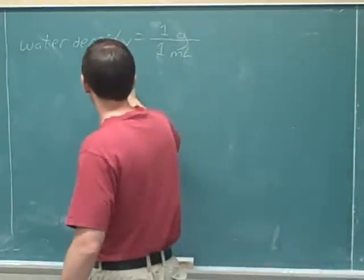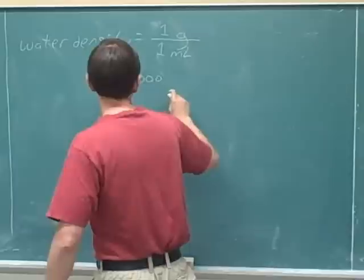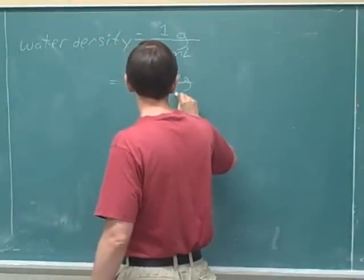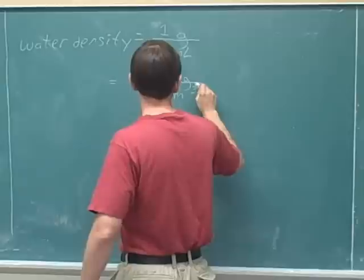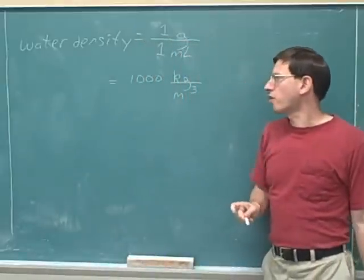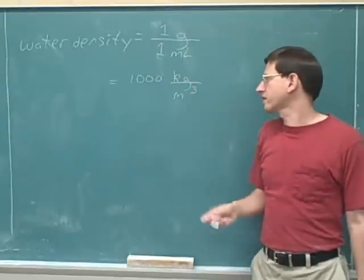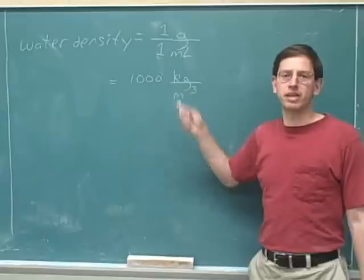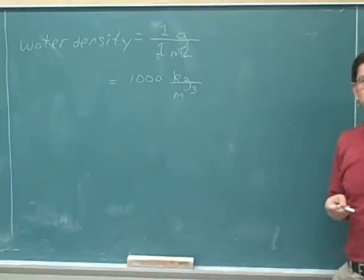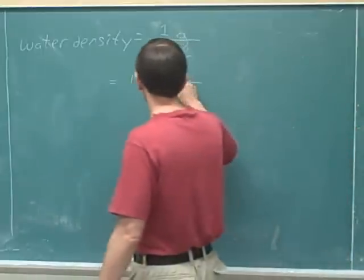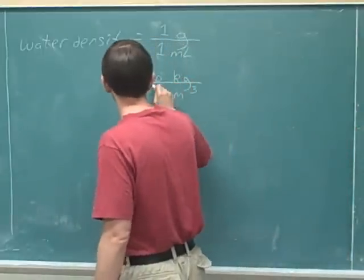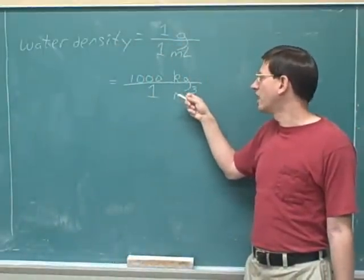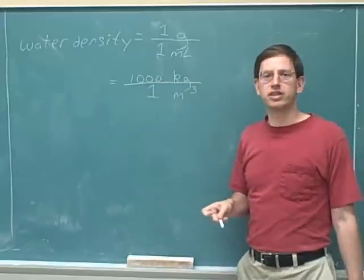Another way to express the density of water is that it's 1,000 kilograms per cubic meter. Try to pause the video and articulate what that means. Well, we'll put those into a single ratio. It means that if you had one cubic meter of water, it would have a mass of 1,000 kilograms.